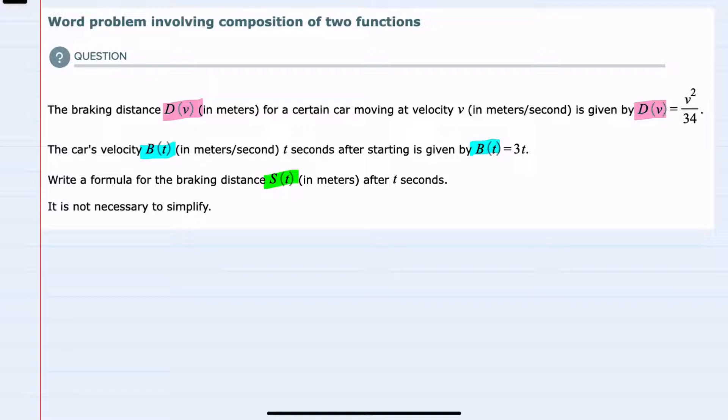where s is the breaking distance, but instead of as a function of velocity as it was originally, we want it as a function of time. So we're going to take this velocity function and substitute it into the d function.